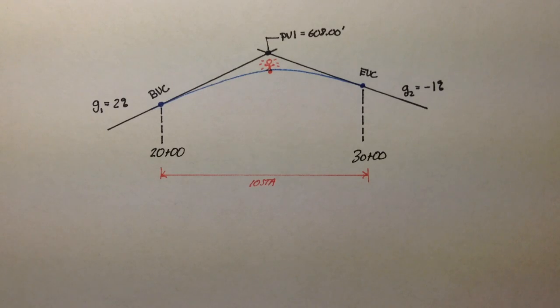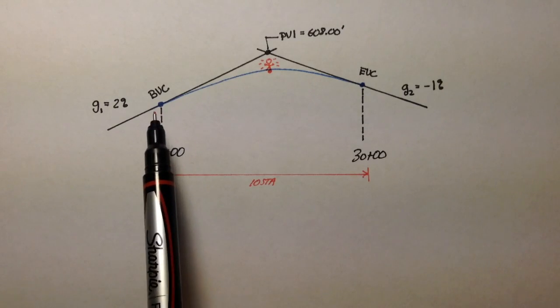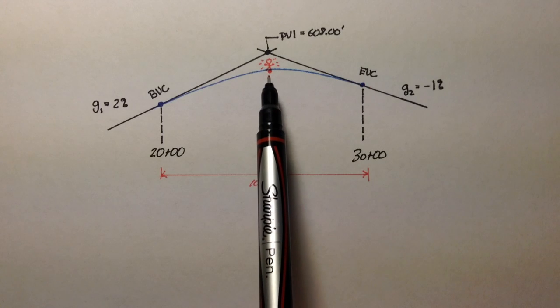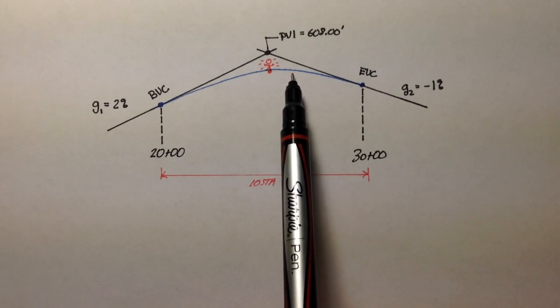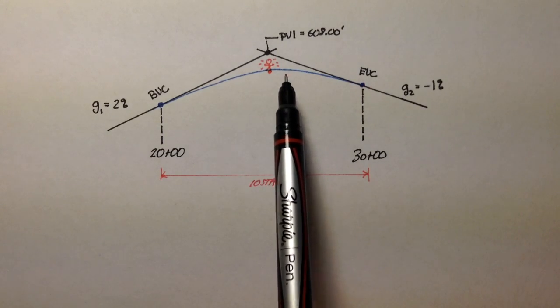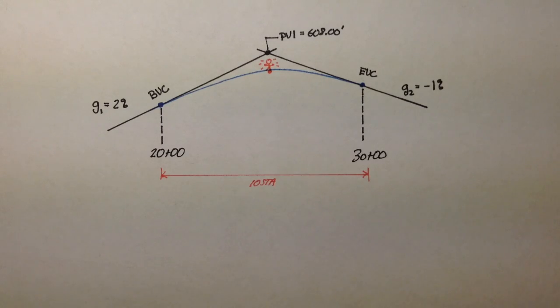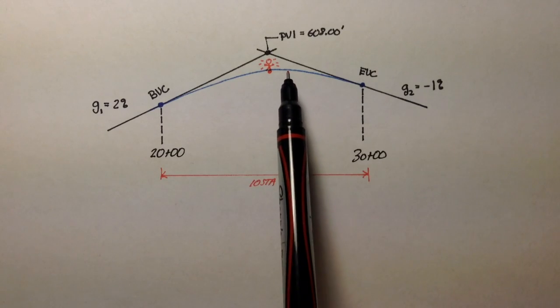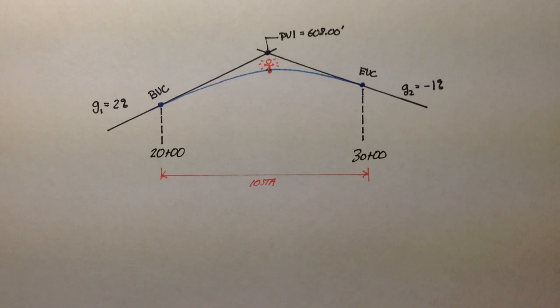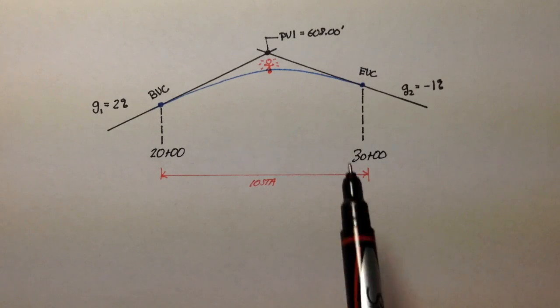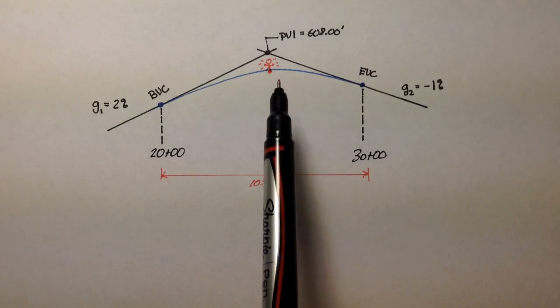The third thing we want to find out is where the highest point on this curve is located. And the last thing we want to find out is what the elevation of that highest point is. If you remember, most vertical curves, the highest point doesn't occur at the middle of the curve. In other words, the highest point is not always at the PVI.